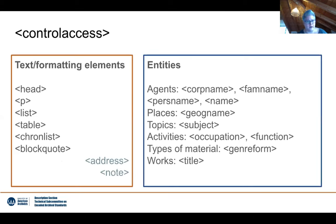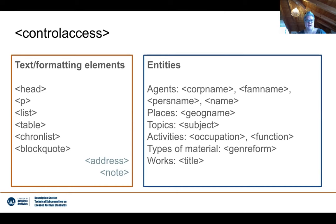How does control access look — and this applies to EAD 2002 as well as EAD3. Control access essentially consists of two main parts that you can use together or independently. Similar to the scope content or bioghist elements, control access also has text and formatting elements with a header, paragraph, and list. The main things we want to look at today are the entities you can describe in control access: agents (corp name, family name, personal name, and name), places with geogname, topics or themes with subject, activities with occupation and function, types of material with genre form, and works with the element title.